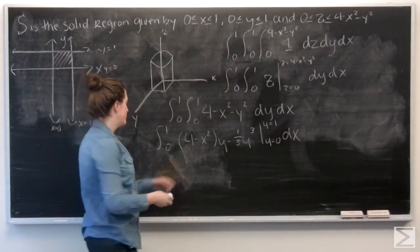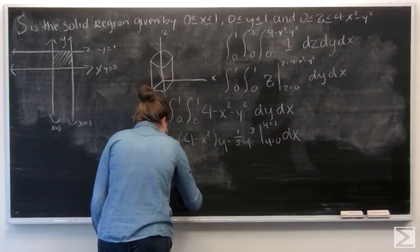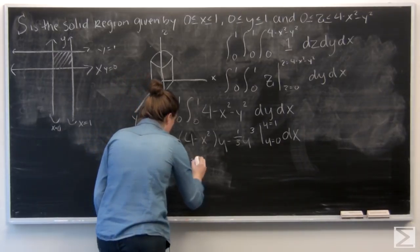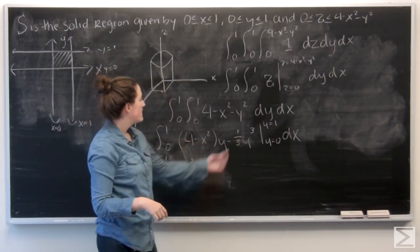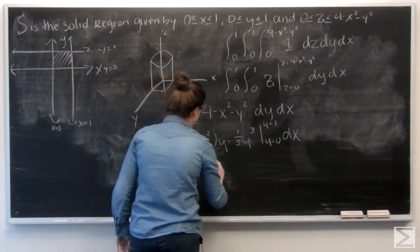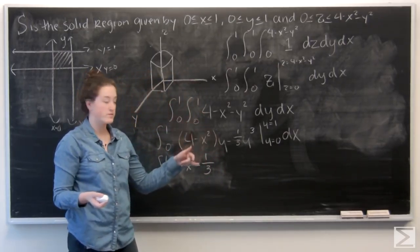So now let's plug in 1 for y. 1 times 4 minus x squared, just 4 minus x squared. And then this is going to become a 1 third. Now for z equals 0, both of these terms drop out.